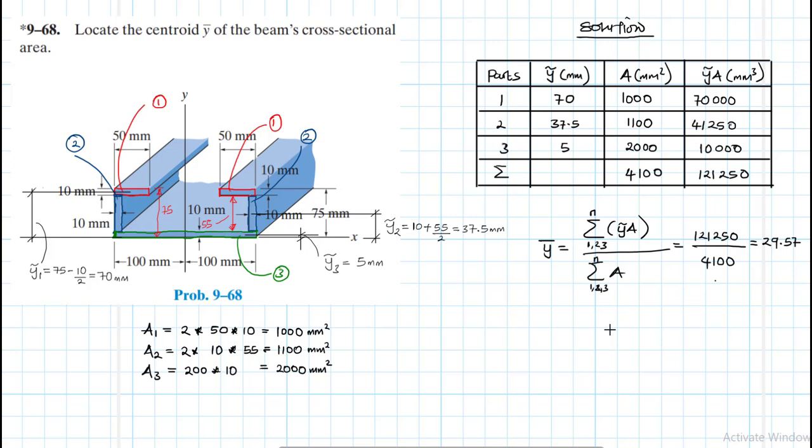So let's now give a summary of the final solution: y-bar is equal to 29.57 millimeters. So let's also show this in our figure where exactly it is. I'll use red, somewhere there. And now with reference to x-axis, this line there. So this is the location we are talking about, which is y-bar equal to 29.57 millimeters.